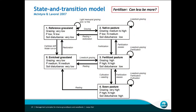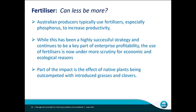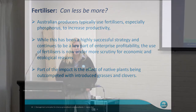Going back to our state and transition model, we've looked at grazing — seasonality and stocking rate is really important. Now let's look at fertiliser, which is another key driver in shifting between these states. We typically use fertilisers, especially phosphorus, to increase productivity. This has been a really highly successful strategy and a key part of how you might be profitable. But we're looking at the use of fertilisers for economic reasons — it's very expensive these days — as well as ecological reasons.